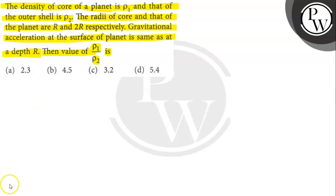Let's find out. To solve this question, we need to find the gravitational field at the surface and at a point at depth r below the surface. Equating these, we will get the relation between the densities of the core and the outer shell, from which the required ratio can be calculated.